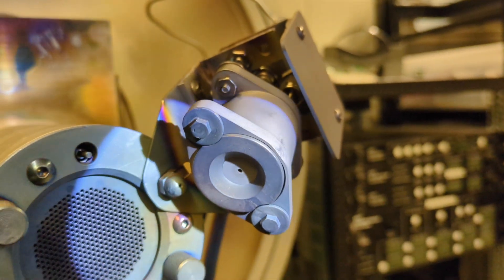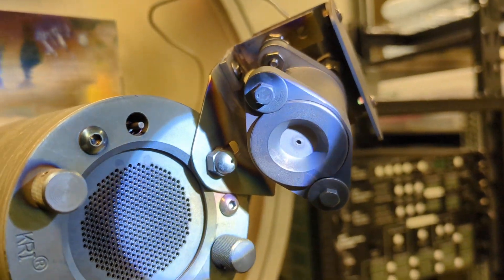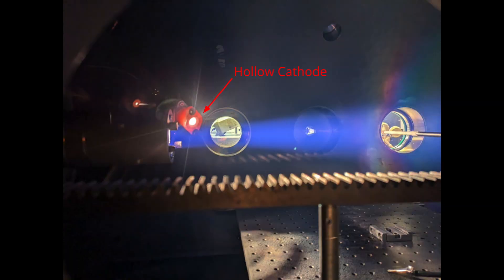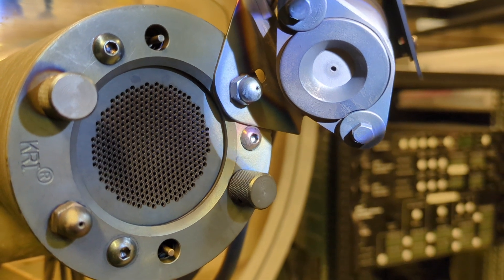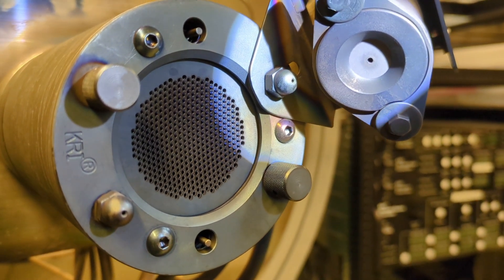Out here we have our hollow cathode neutralizer. So this is getting hot, not quite as hot as the wire. It glows red when it's operating. But this will be boiling off electrons so that if this were operating on a spacecraft, the ions wouldn't fly back and erode the spacecraft.